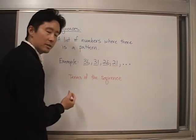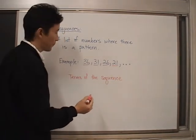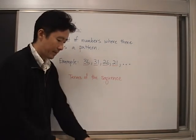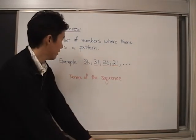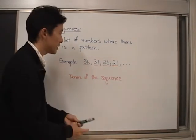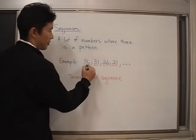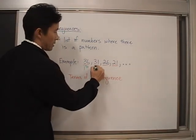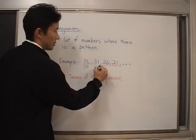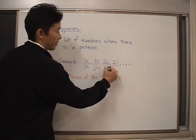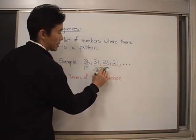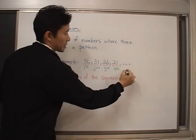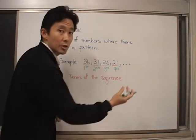And that's going to be another very important thing to know. So what we can say then is that this number here — 36 — is the first term of the sequence, the second term of the sequence, the third term of the sequence, the fourth term of the sequence, and so on.